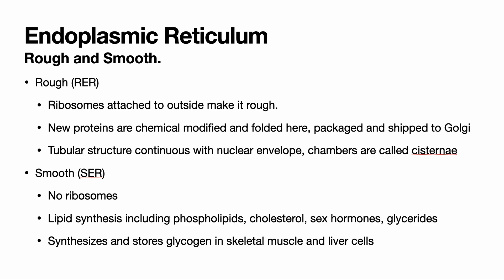The smooth endoplasmic reticulum does not have ribosomes attached to it. This is where we see the synthesis of lipids — phospholipids, cholesterol, sex hormones, and glycerides — rather than proteins. In some cells, like skeletal muscle cells and liver cells, the smooth ER is really good at synthesizing and storing glycogen, and may also serve as a storage site for calcium. Some organelles can perform different functions depending on the cell type.